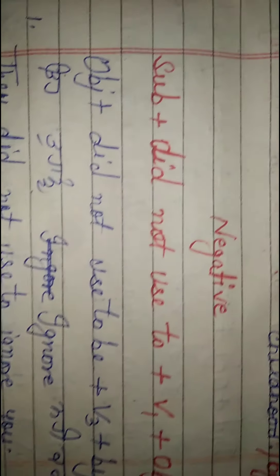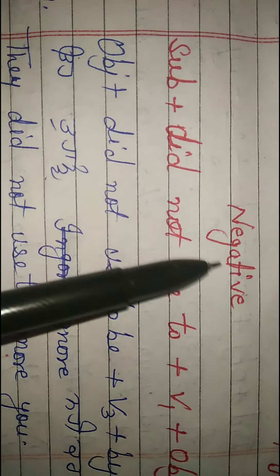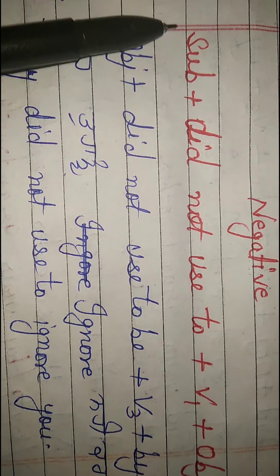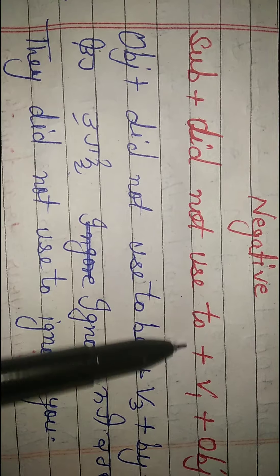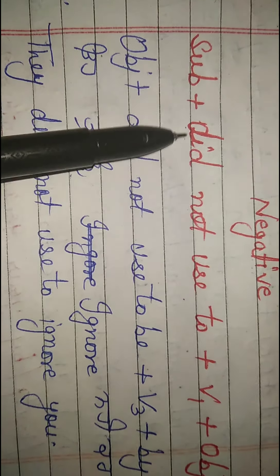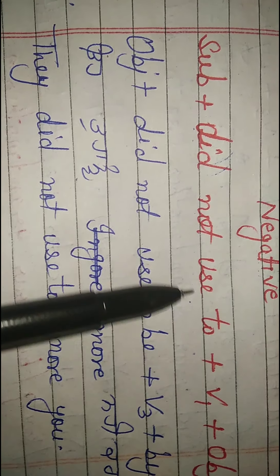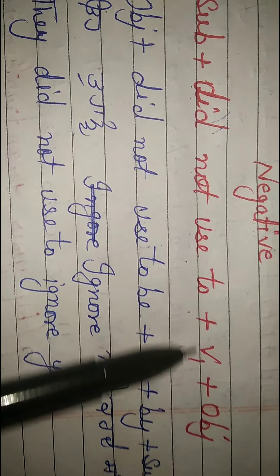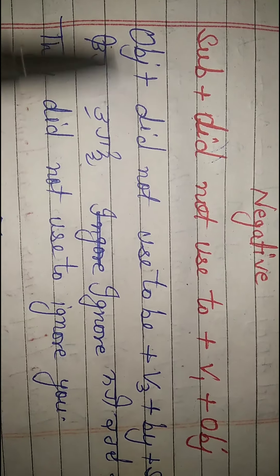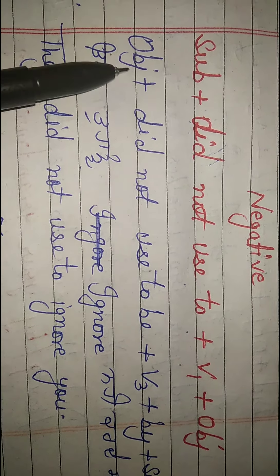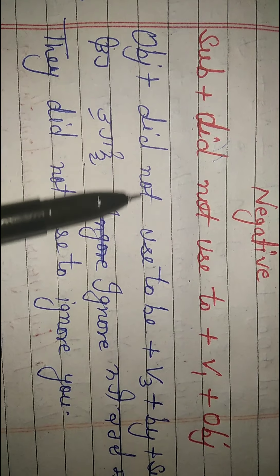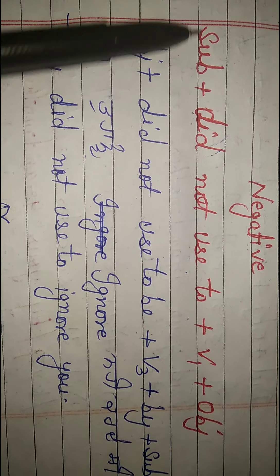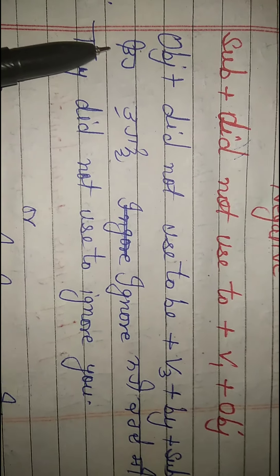Now let's see the negative. The negative active structure is: Subject + did not use to + verb in the first form + object. The passive structure is: Object + did not use to be + verb in the third form + by subject.